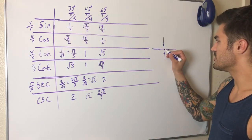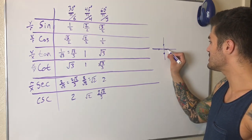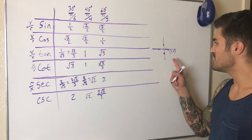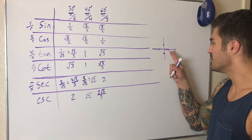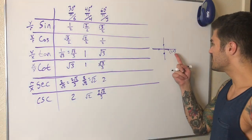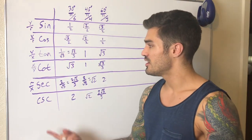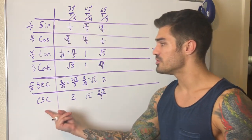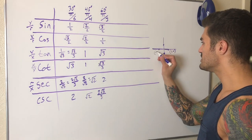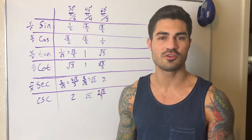Think about the unit circle — it has a radius of 1, so the distance from the center to any point on the circle is 1. At 0°, we're on the x-axis, so x = 1 and y = 0. That means cos(0°) = 1 and sin(0°) = 0. Anything with y in the denominator is undefined, so cotangent and cosecant of 0° are undefined. This works for any quadrantal angle — at 3π/2, x = 0 and y = −1. No memorizing required.